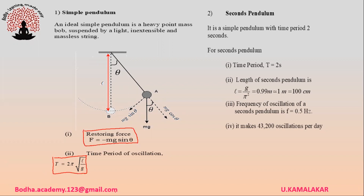A simple pendulum whose time period is 2 seconds is known as a seconds pendulum. The length of a seconds pendulum is l = g/π², which is approximately equal to 1 meter or 100 centimeters. The frequency of oscillations of a seconds pendulum is 0.5 hertz, and it makes 43,200 oscillations per day.